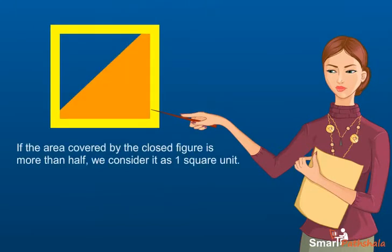2. If the area covered by the closed figure is more than half, we consider it as one square unit.